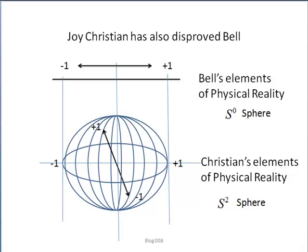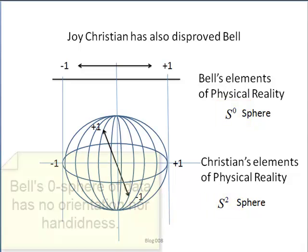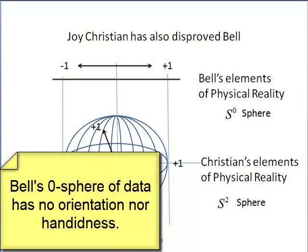In contrast to Bell, Christian realized that spins can point in two directions over the surface of the usual unit sphere in the real world, and this is called a two-sphere S^2. The top line, the zero sphere, is Bell's, and the two-sphere is Christian's. Bell's choice has no orientation nor left and right handedness, while the two-sphere of Christian's does.